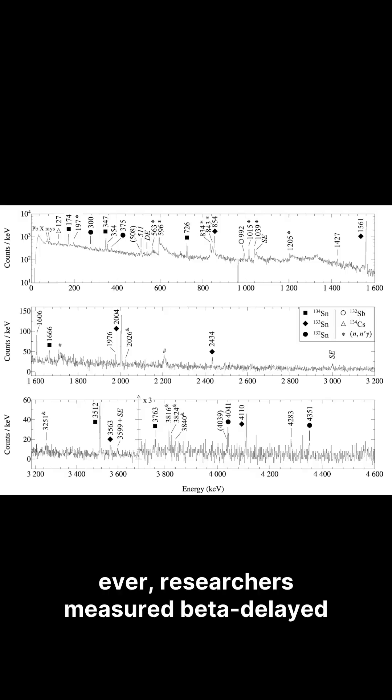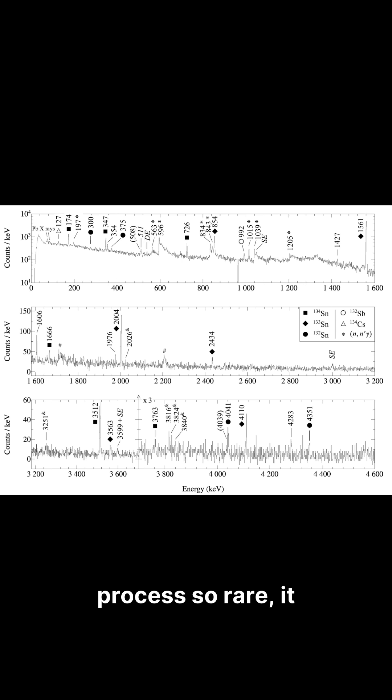For the first time ever, researchers measured beta-delayed two-neutron emission in indium-134, a process so rare it only happens in exotic, short-lived nuclei.